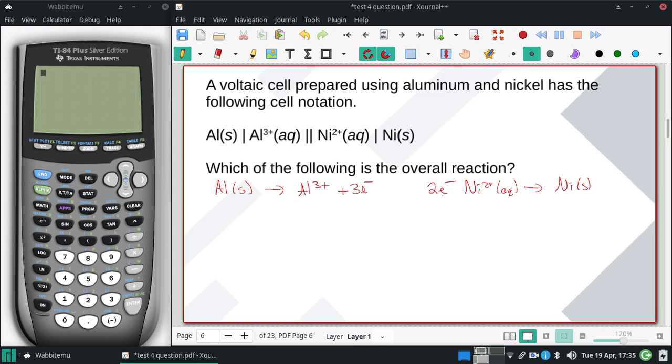This one just needs two electrons. And we're going to combine these by doubling that first equation and tripling the next so the electrons would be the same.